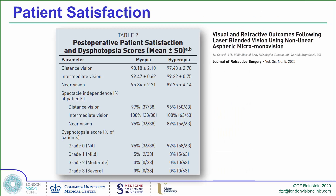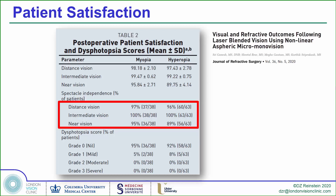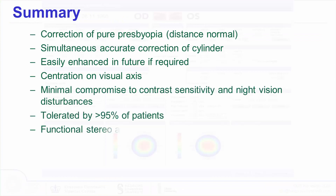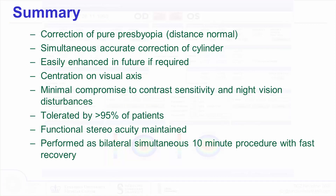Sri Ganesh and his group studied patient-reported outcome measures in Presbyond and published extremely high satisfaction rates, with only 3–5% of patients still using spectacles for distance or near tasks, and none at intermediate. In summary, the correction of plano-presbyopia can be achieved very accurately with minimal compromise to visual quality, preservation of functional stereoacuity, in a procedure suitable for over 95% of patients. It's easily enhanced in the future if changes occur, and it is performed as a 10-minute bilateral simultaneous LASIK that heals in a few hours — with the patient almost certainly reading the menu that evening without glasses.